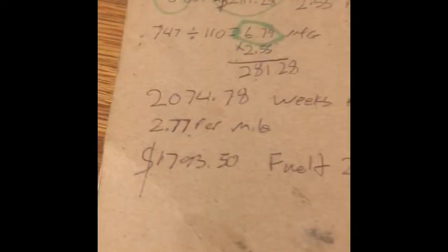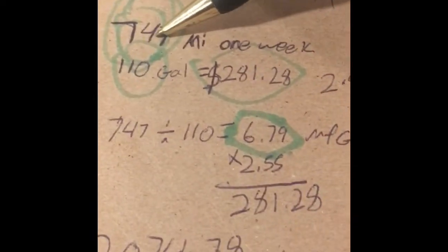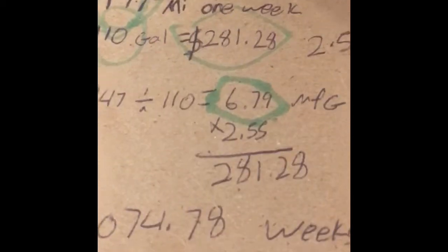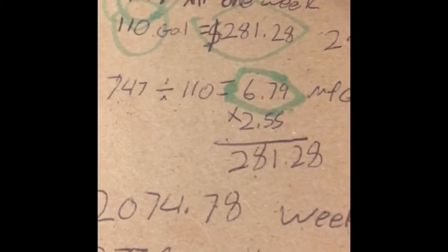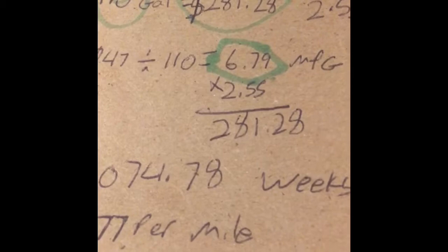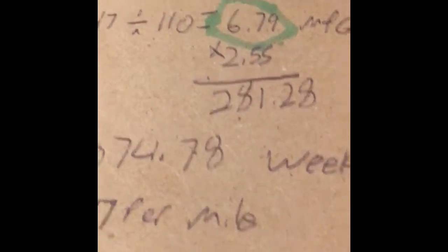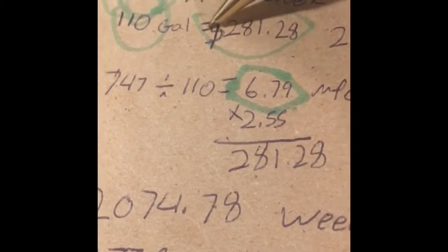So plug in those numbers. This is my miles for the week. Keep in mind this is car hauling and I'm home every night, you don't put on a lot of miles. So for the week, 747 miles in one week, my gallons of fuel was 110 gallons.